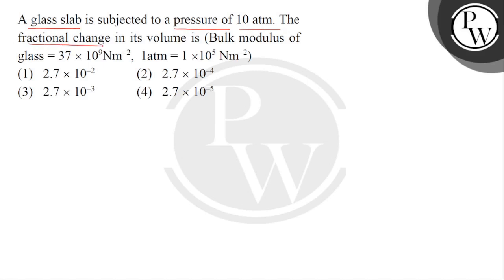The fractional change in its volume is bulk modulus of glass equals to 37 multiplied by 10 to the power 9 newton per meter square. One atmospheric pressure is 1 multiplied by 10 to the power 5 newton per meter square.